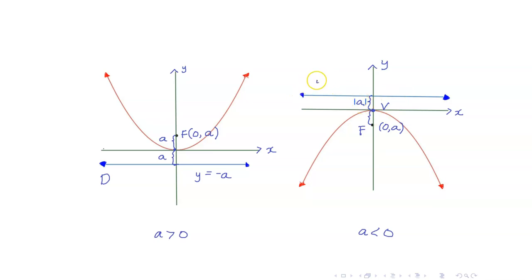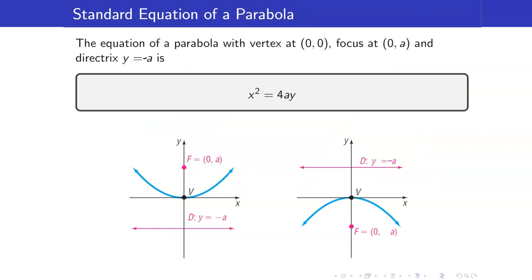This is the case when A is positive. What will happen if your A is negative? In this case, my vertex still occurs at the origin, and your A is negative — it's below your origin. This is still the point (0, A), that is my focus. And the equation of the directrix is y equals negative A. Remember here that A is negative, so negative A is positive. In both cases, the focus will always occur at the point (0, A) and the equation of your directrix is y equals negative A. The equation of a parabola with vertex at (0,0), focus at (0, A), and directrix y equals negative A is x² = 4Ay. A parabola opens upwards if A is positive and opens downwards if A is negative.